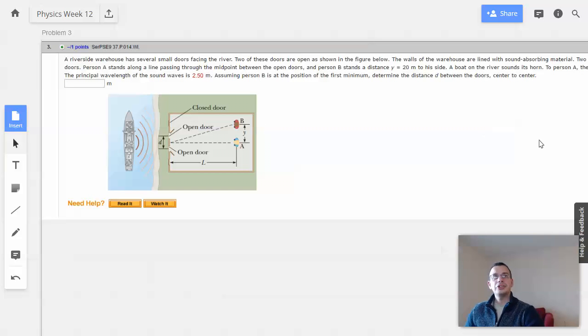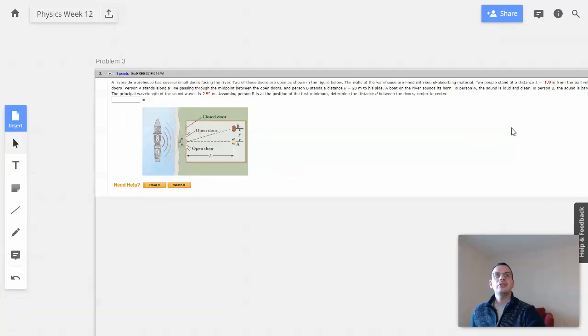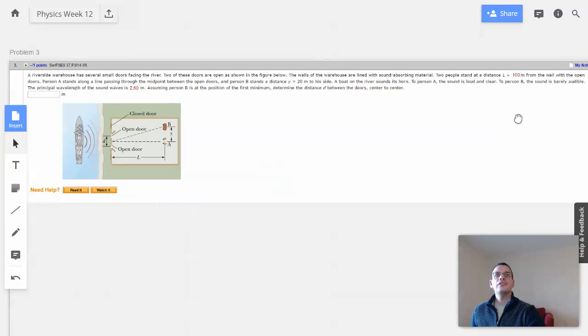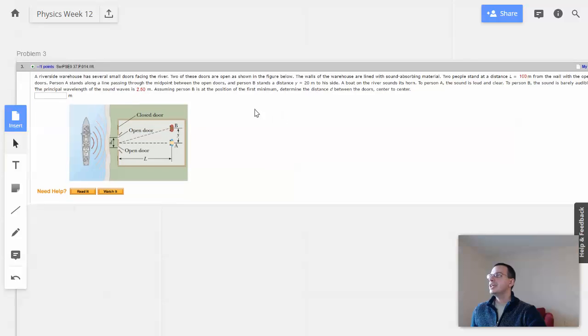The walls of the warehouse are lined with sound-absorbing material. Two people stand at a distance L, which equals 100 meters, from the wall with the open doors. Person A stands along a line passing through the midpoint between the open doors. Person B stands at a distance of Y equals 20 meters to his side. A horn on the river sounds its horn.